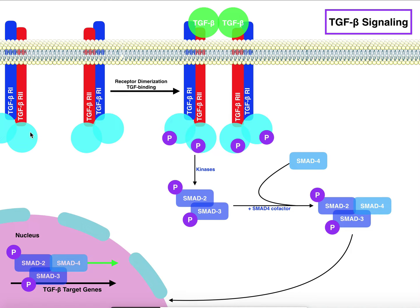First of all, we have TGF-beta receptors. We have type 1 receptors which are in blue and type 2 receptors which are in red. Initially they're going to be dimerized. We have a heterodimer of the receptor 1 and receptor 2 type like this.